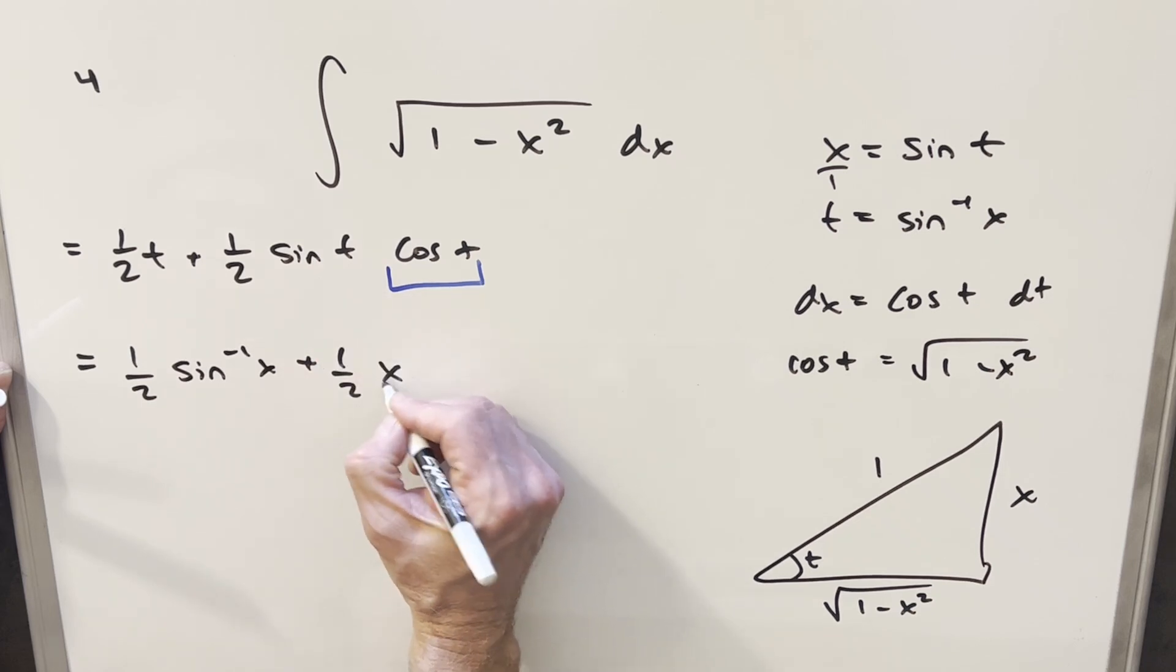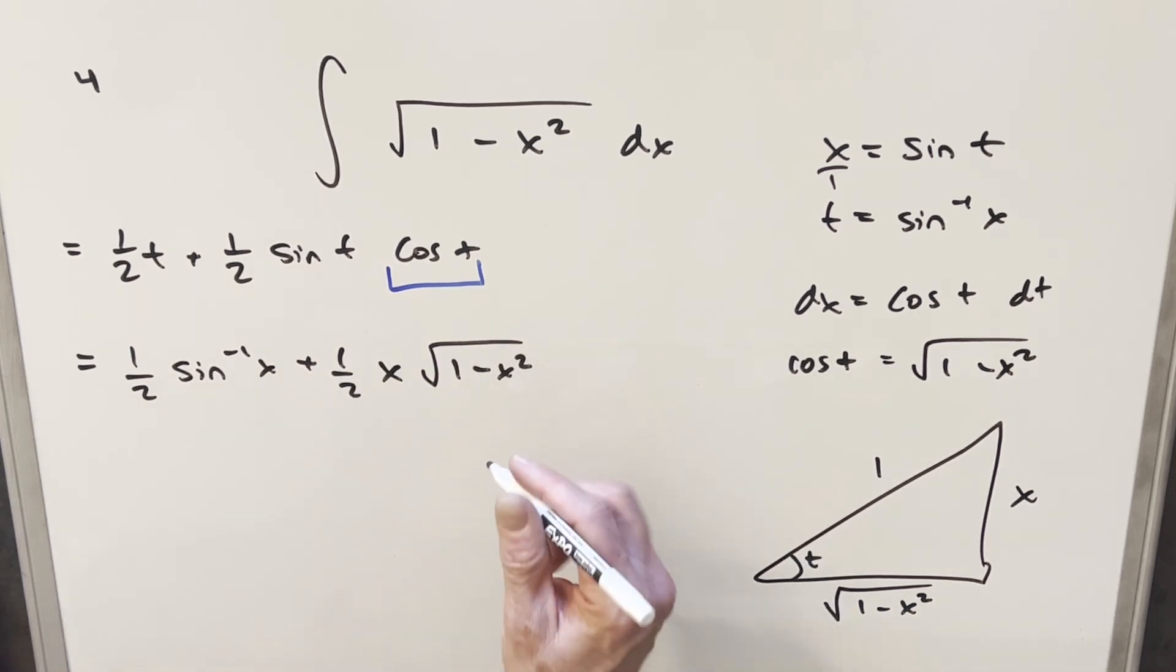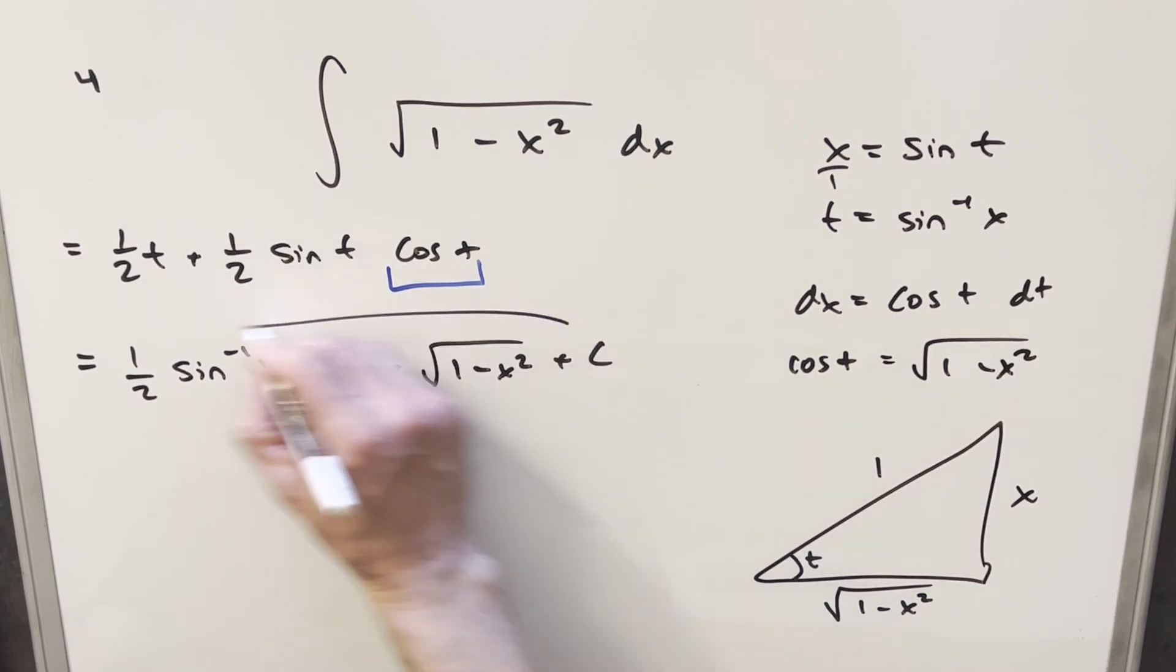Sine t is just x. Cosine t we just found. And so I'll just add a plus c on there. And that's it.